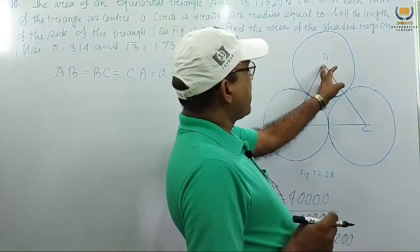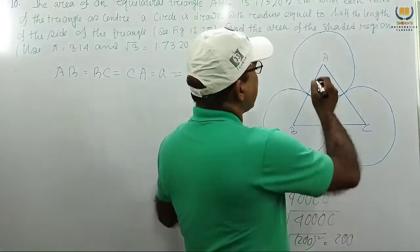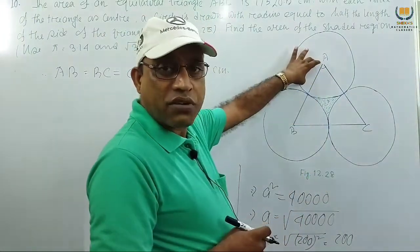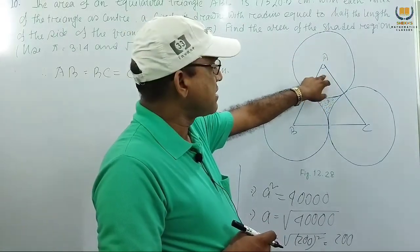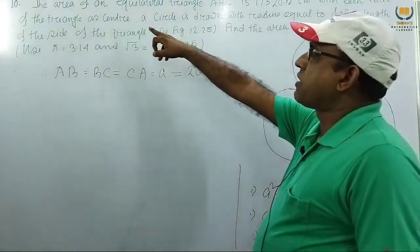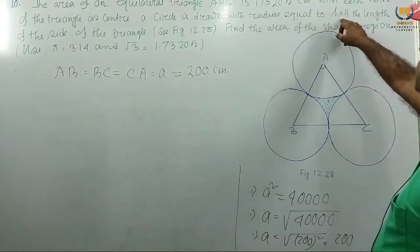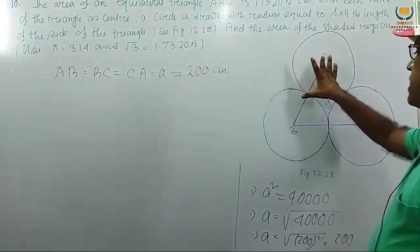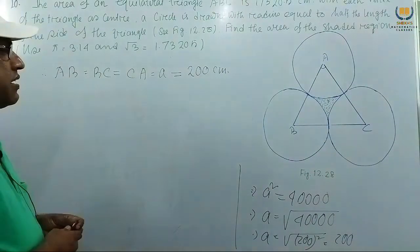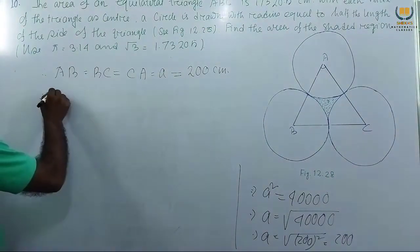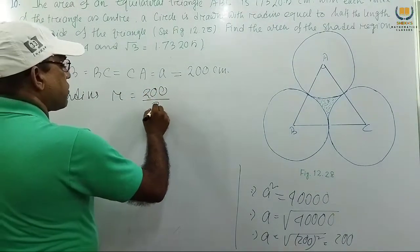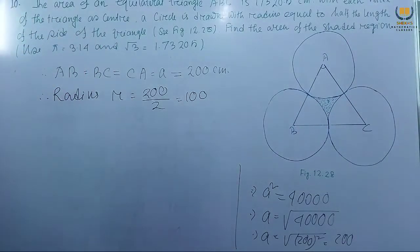Now we want to find the sector area. For the sector area we need the radius and the angle. The angle is 60° because this is an equilateral triangle. The radius is given as half the length of the side of the triangle. The side is 200, so the radius R = 200/2 = 100 cm.